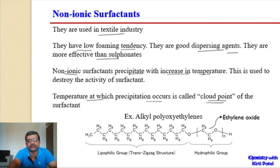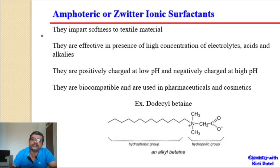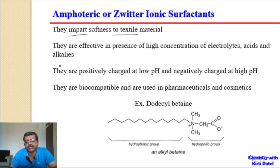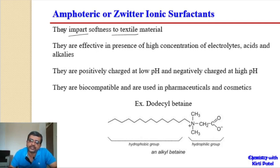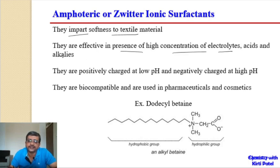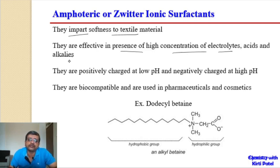Amphoteric or zwitterionic surfactants impart softness to textile materials and are used in processing costly fabrics. They are effective in the presence of high concentrations of electrolytes, acids, as well as alkalies — unlike other surfactants which behave differently in acidic versus basic conditions. Amphoteric surfactants can withstand both acidic and alkaline conditions and high electrolyte concentrations.